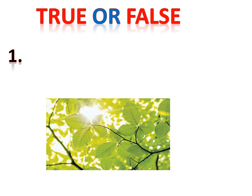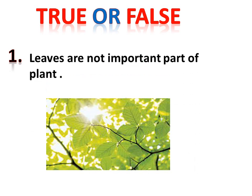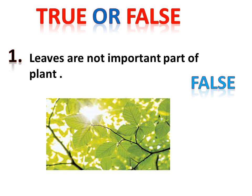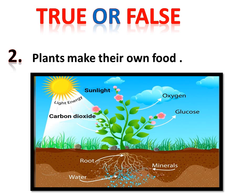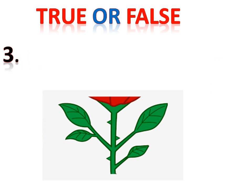Now we have true or false statements. Statement one: leaves are not an important part of the plant. Without leaves we would never see a plant, so this statement is false. Statement two: plants make their own food. We know very well that plants make their own food, so this statement is true.